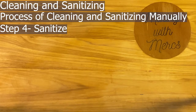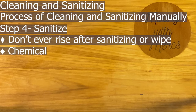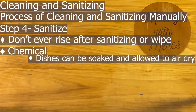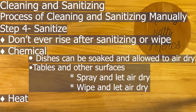Step four is to sanitize. The most important thing here is you never rinse after you sanitize and you don't wipe it off — always air dry. For chemical sanitizing, dishes can be soaked by dipping them into that last sink and allowing them to air dry. For in-place equipment, tables, or other surfaces, you can spray or wipe with sanitizing solution and let it dry, ensuring contact time is reached and concentration levels are correct.